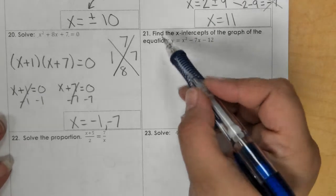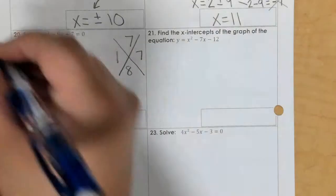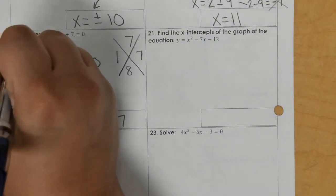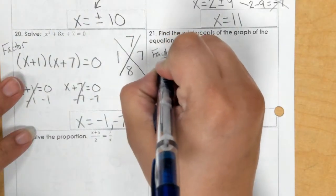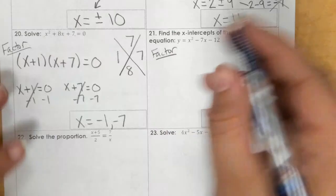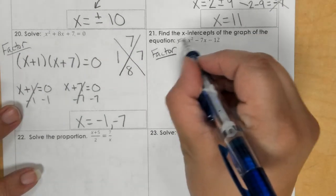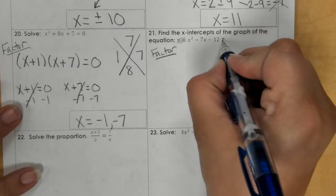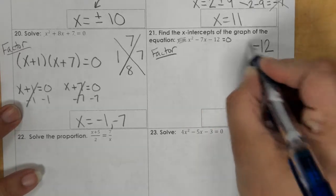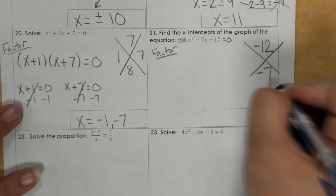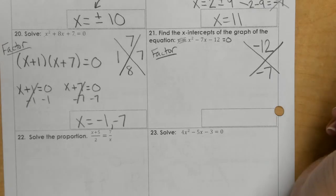And number 21, it's also a factor problem. So I'm going to get rid of my y equals, set it equal to 0. 1 times negative 12 is negative 12. I have to get to negative 7.